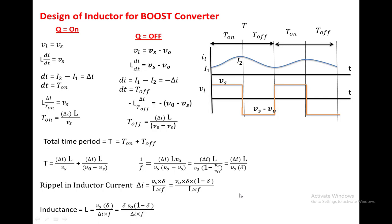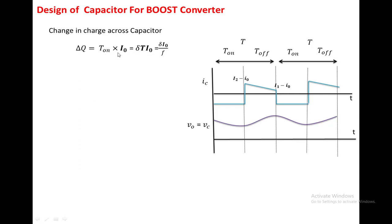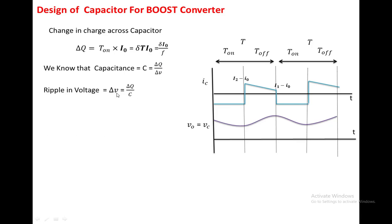Now we are going to see the design of capacitor for the boost converter. We take the capacitor current waveform and capacitor voltage. First, we find the change in charge across the capacitor: delta_Q equals minus I0 into T_on, so delta_Q equals T_on into I0. Writing T_on as delta into T, and since delta equals T_on divided by T, and T equals 1/F, we get delta_Q equal to delta into I0 divided by F. We know that for a capacitor C equals delta_Q divided by V, so delta_V equals delta_Q divided by C. Substituting delta_Q: delta_V equals delta into I0 divided by (F into C).